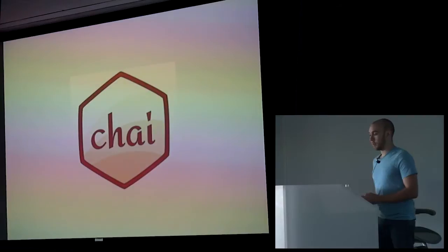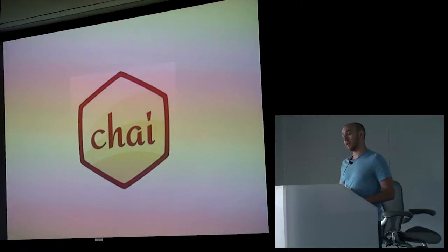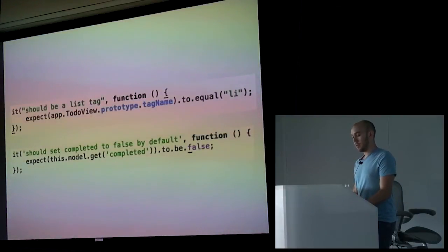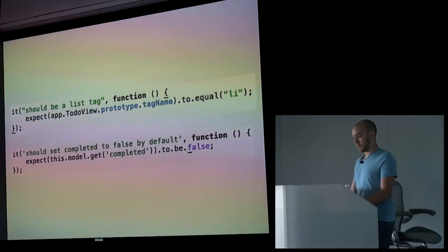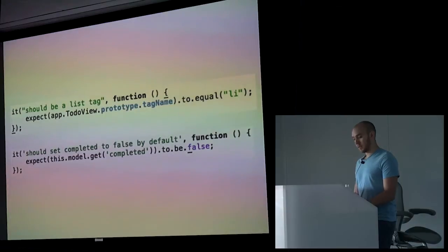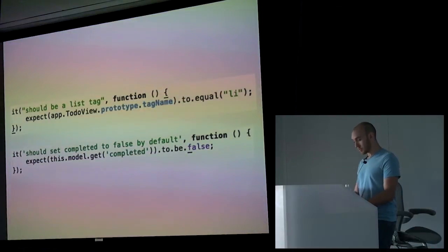We can actually make this more readable using Chai.js, which is a test library. It provides an API to help you write tests in a more readable fashion and gives you more functions to help you test more easily. We can look at the exact same test - it should be a list tag - except we're going to use Chai's expect verbiage where we say expect the tag name to equal an li. In the second example, we have it should set completed to false by default, and we expect this.model not completed to be false, because we have just created a blank model.